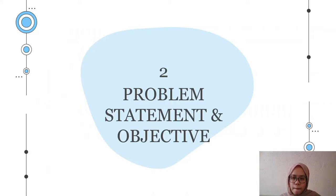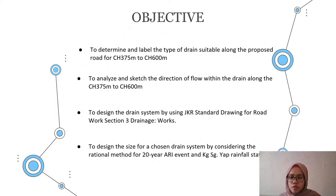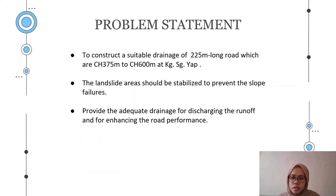Problem Statement and Objectives. The first objective is to determine and label the type of drain suitable along the proposed road from channel 375 to channel 600 meter. The second is to analyse and sketch the directions of flow within the drain along channel 375 to 600 meter. The third is to design the drain system using JKR standard drawing for road works section 3 drainage works. The last is to design the size for a chosen drain system considering the rational method for a 20-year ARI event at Kampung Sungai Yap rainfall station. The problem statement is to construct a suitable drainage for a 225-meter long road from channel 375 to channel 600 meter at Kampung Sungai Yap, stabilize the landslide area to prevent slope failure, and provide adequate drainage for discharging runoff and enhancing road performance.